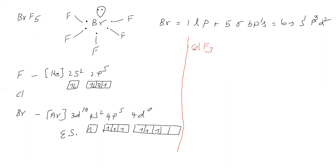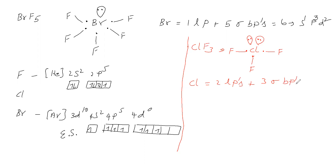Next we will take ClF₃. In ClF₃, the central atom is chlorine. Chlorine comes under group 7, so the valency shell has seven electrons. Fluorine makes a single bond with chlorine. Chlorine is having two lone pairs and three sigma bond pairs — totally five. Writing SPD: one to S, three to P, remaining one to D. So hybridization of Cl in ClF₃ is sp³d.